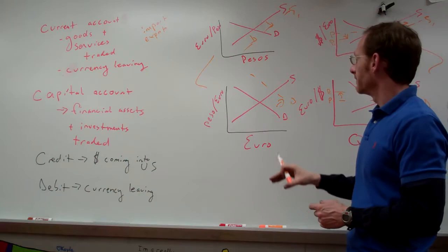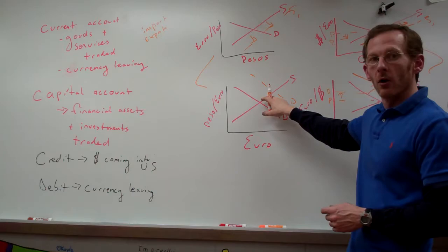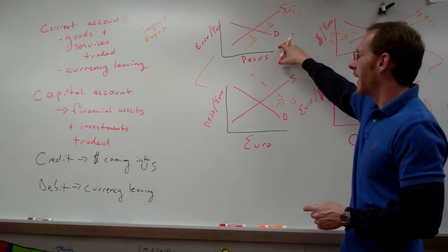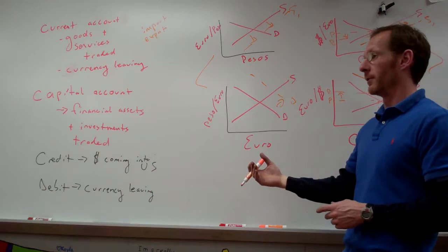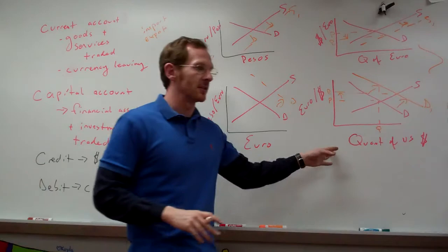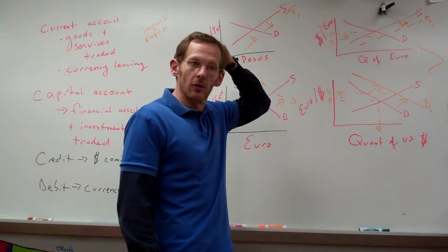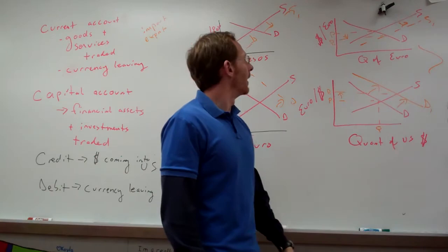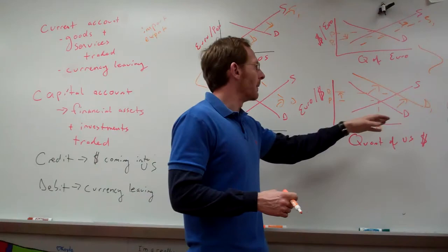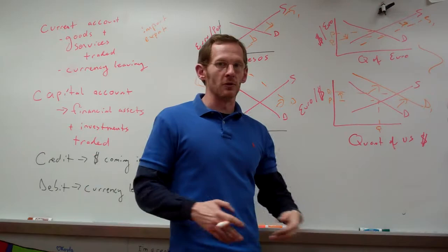So we have increased demand for euros appreciating the relative price of euros to pesos, and a higher supply of pesos which depreciates the value of pesos relative to euros. You could also say that since we're demanding more US dollars, there's a smaller demand for euros, which also shows a depreciation of the euro's value.